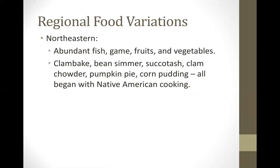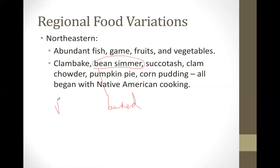In the northeastern region, fish, game, and fruits and vegetables were abundant. This region was very heavily wooded with coastline and many lakes, and was famous for particular recipes. They enjoyed clam bake, and a bean simmer — which was actually a precursor to Boston baked beans, made with baked beans and maple syrup.